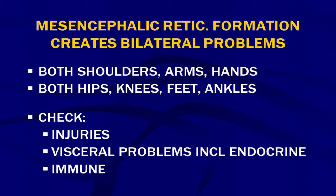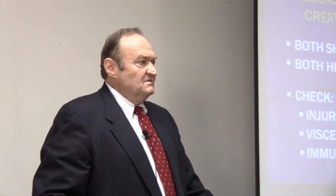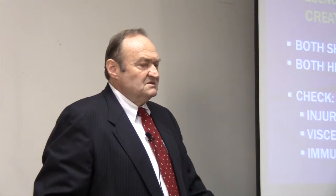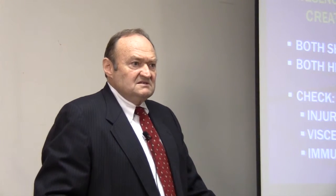The mesencephalon reticular formation creates bilateral problems — bilateral patterns. So you see bilateral shoulder problems, bilateral arm problems, bilateral hand problems, or bilateral hips, knees, ankles, or feet. When they're bilateral, the first thing I think of is: is this coming from the mesencephalon pattern generators? It doesn't have to be — it could be a unique bilateral problem, or a flexion in the spine causing bilateral activity. But a lot of times when there are bilateral symptoms, the problem is arising in the mesencephalon.